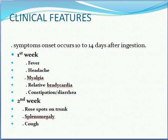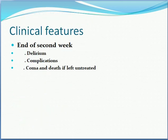At the end of the second week, a rash may appear on the upper abdomen and on the back. The rashes are slightly raised, fade on pressure. Splenomegaly also occurs around seven to ten days. The spleen becomes palpable at the end of the second week. Complications such as intestinal bleeding, intestinal perforation, and coma or death may occur if left untreated.